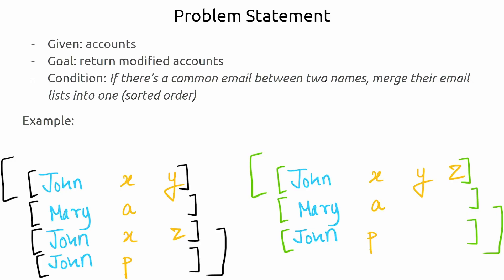Let's talk about the problem statement. The question gives us some accounts and we have to return modified accounts. The condition says that if there's a common email between two names, merge their email lists into one in sorted order. One key point is that there can be multiple people with the same name, but there can also be multiple different lists of the same person.